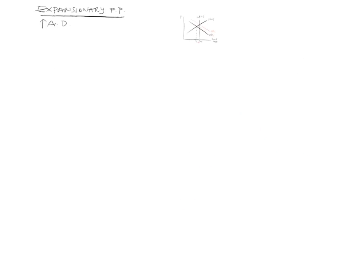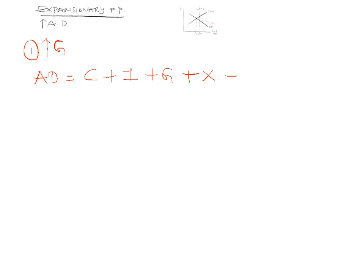So how do we actually increase aggregate demand? There are three ways we can do it. The first one is to increase government spending. Aggregate demand equals C plus I plus G plus X minus M. We increase G, so we increase aggregate demand and shift the aggregate demand curve outwards.